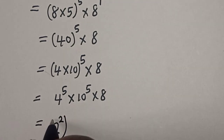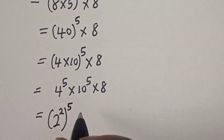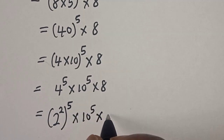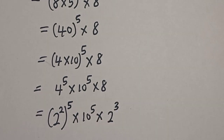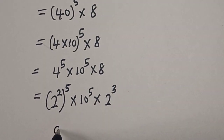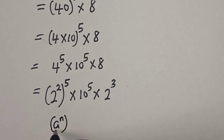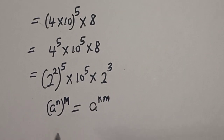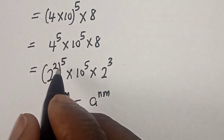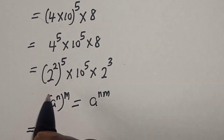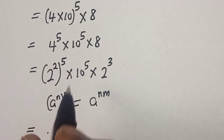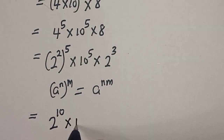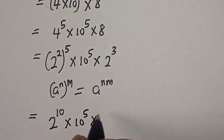Now 4 raised to power 5 can be written as 2 raised to power 2, to the power of 5, multiplied by 10 to the power of 5, multiplied by 8, which can be written as 2 raised to power 3. Remember this rule: a raised to power n to the power of m is equal to a raised to power n times m. So this is equal to 2 raised to power 2 times 5, that is 2 raised to power 10, multiplied by 10 raised to power 5, multiplied by 2 raised to power 3.